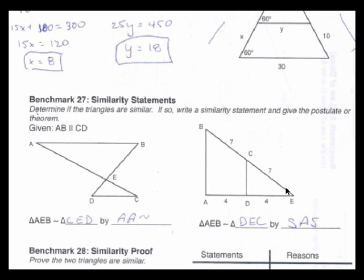That's giving me two side lengths, 7 for the small side, 14 for the large side, 4 for the small side, and 8 for the large side. Those both have a ratio of 1 to 2. So there's two proportional sides.